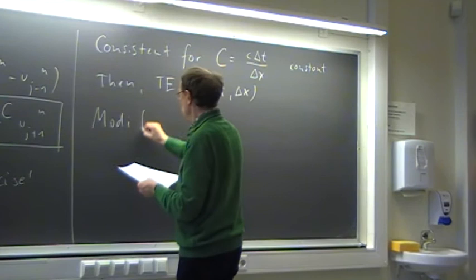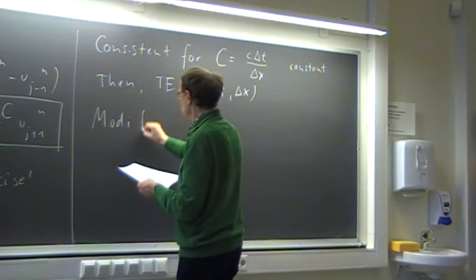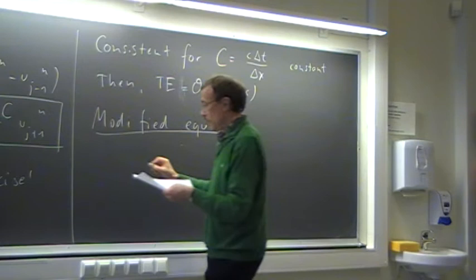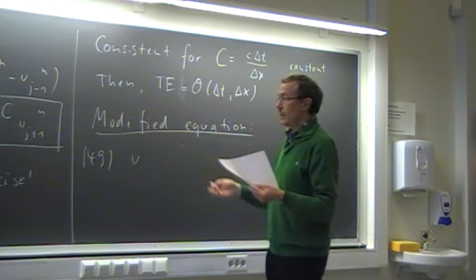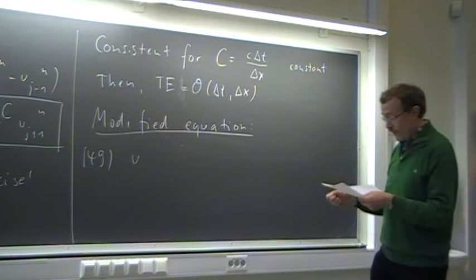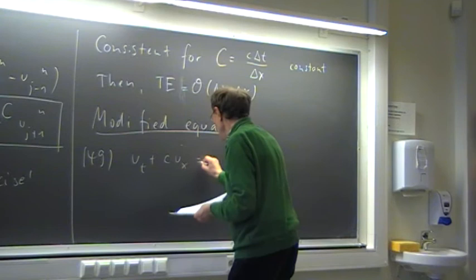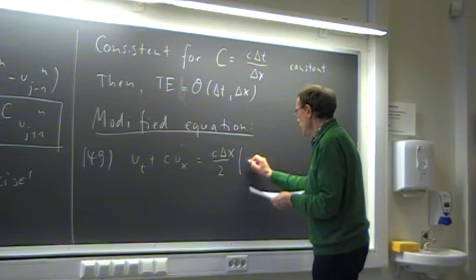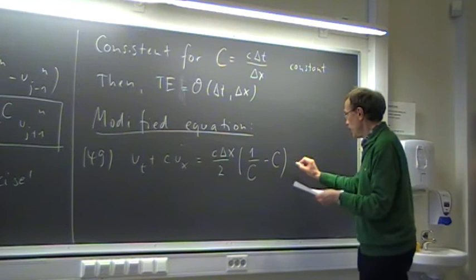We can see even more from the modified equation approach. Skipping the technical details, when we solve the linear advection equation with the Lax-Friedrichs method we actually solve a more complicated equation. The modified equation contains the advection term plus c·Δx/2 times (1/C minus C) times u_{xx}, which is what we call numerical viscosity.